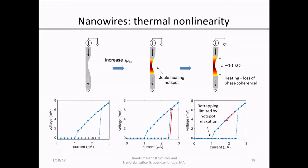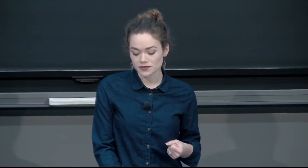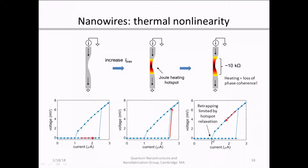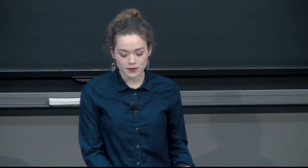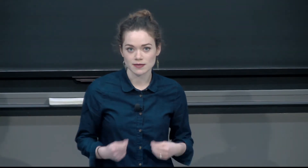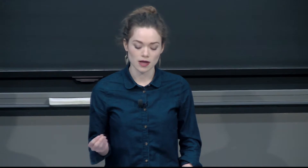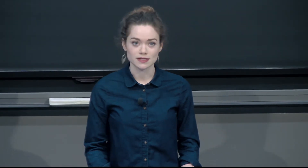If I want to return to the superconducting state, I reduce the bias current. But because you have this heated hotspot, you have to reduce the bias current considerably for that hotspot to collapse and cool down. As a result, you end up with a retrapping current at a much lower bias current than the one you initially switched at — we call that hysteresis. The difference between the switching current and the retrapping current are trademarks of Joule heating, and this bistable switching is limited in time by that hotspot relaxation process, making these much slower than the tens-of-gigahertz oscillations you normally see in a Josephson junction.